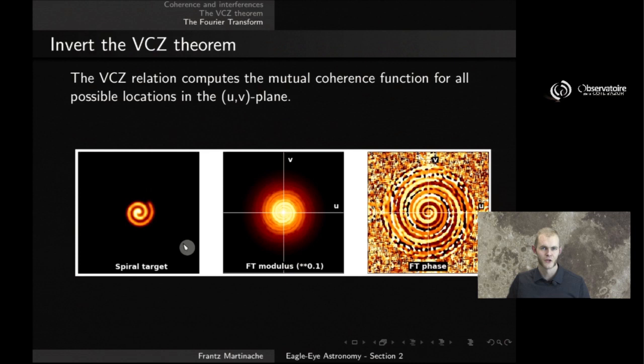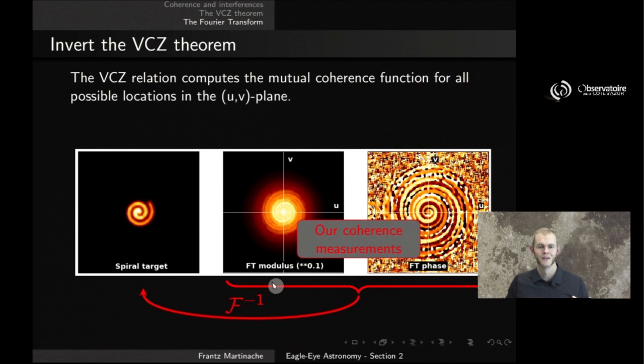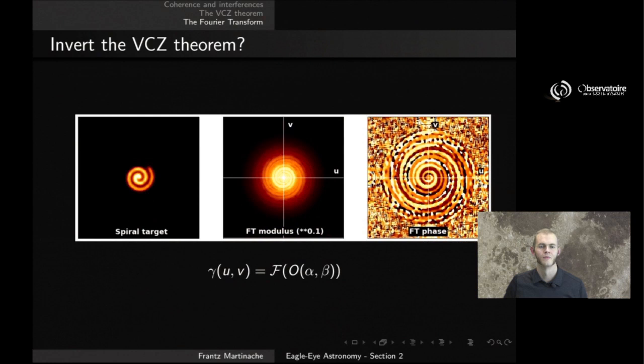Now, of course, the astronomer is in the backward situation, where he's provided with information in that plane, that would be the coherence measurements, and somehow uses them to go back to a description of the object using the Van Cittert-Zernike theorem and an inverse Fourier transform relation. So the way you write this is simply, again, a direct translation of the Zernike theorem. γ is F of O, where F is the Fourier transform. You want to invert that relationship.